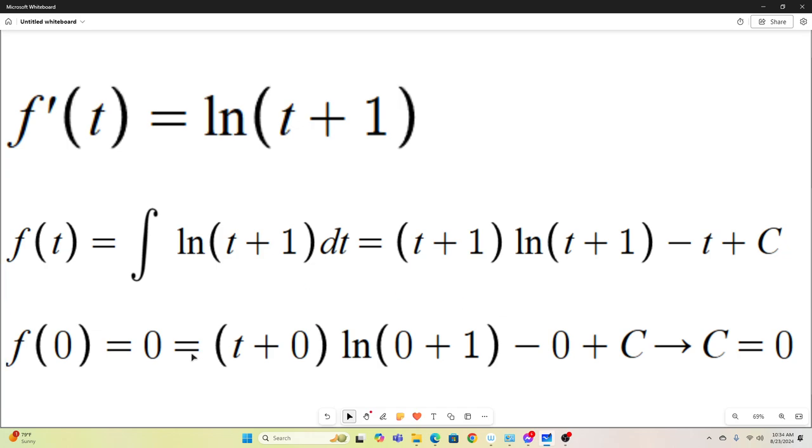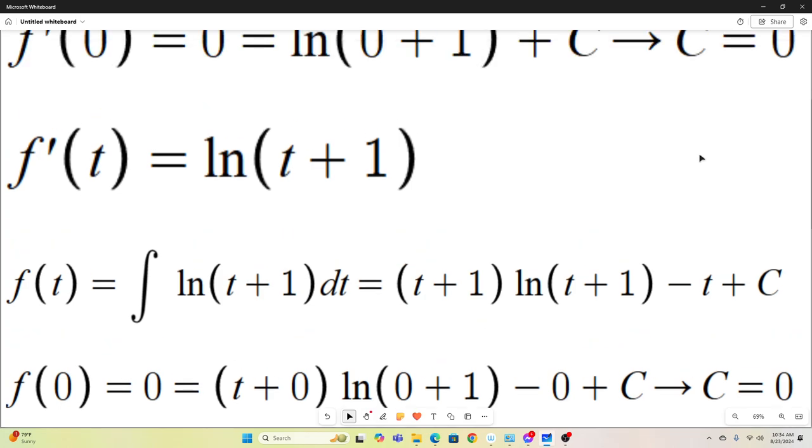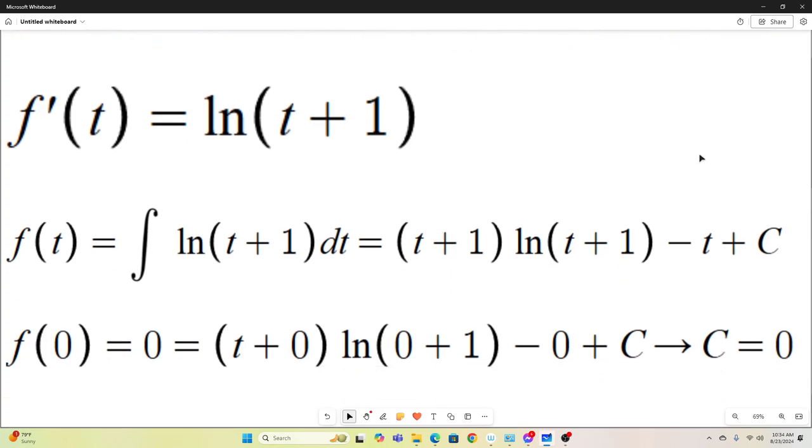Well, we'll notice that this entire thing will cancel out because we just have a natural log 1 here, which is 0 times t is 0 minus 0. So it's all 0. So 0 is equal to 0 plus C. Well, it's equal to minus 0 plus C, but whatever. That means that C is equal to 0. So that means f of t is just equal to this expression right here. And we're almost done.